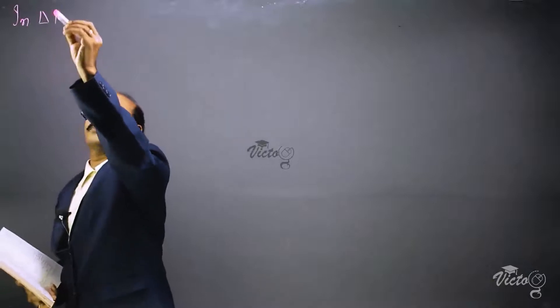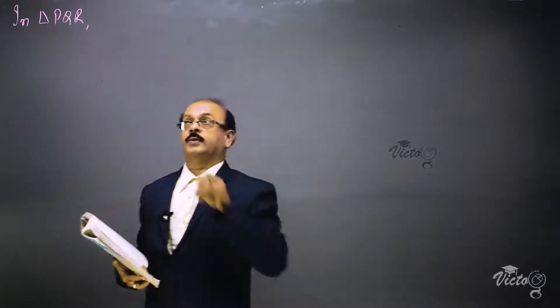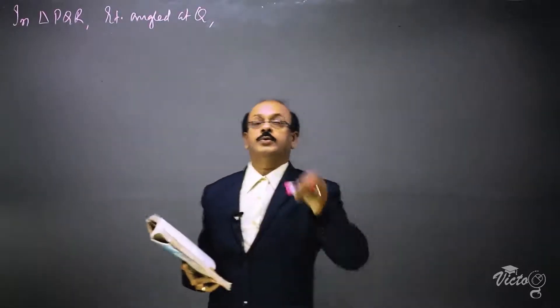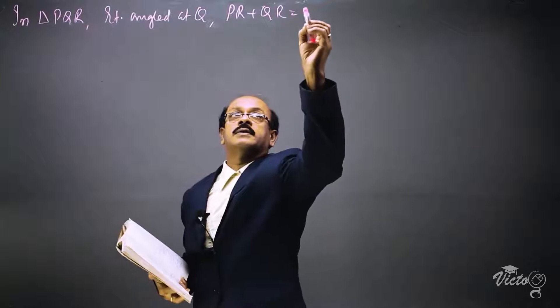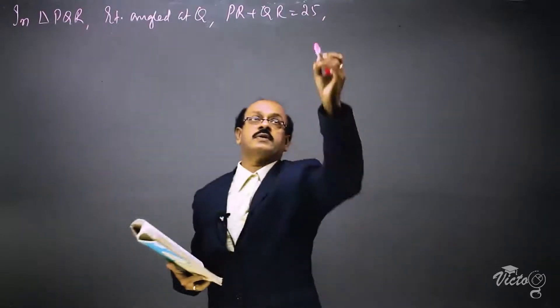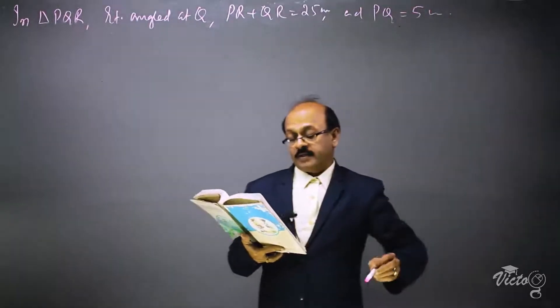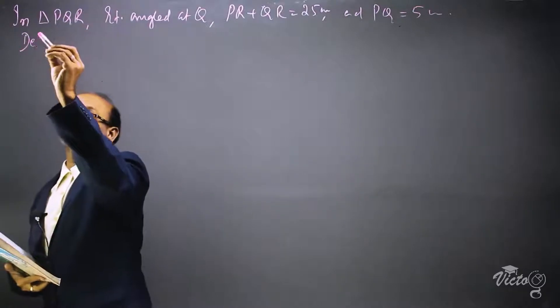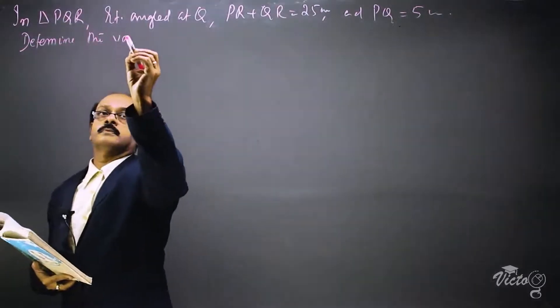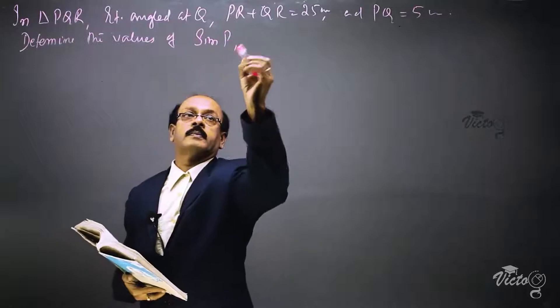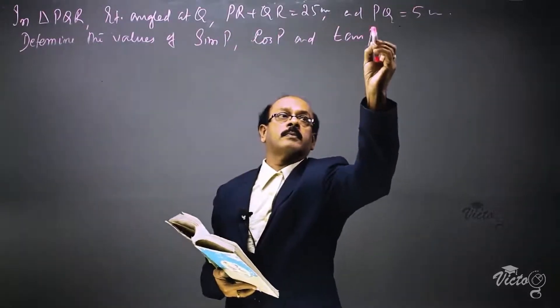The next question we have to solve is: in triangle PQR, right angle at Q, PR plus QR is equal to 25, and PQ is equal to 5 centimeters. Determine the values of sin P, cos P, and tan P.